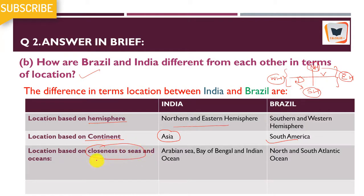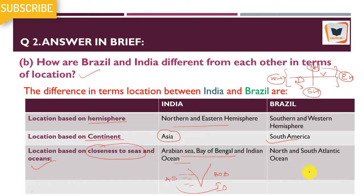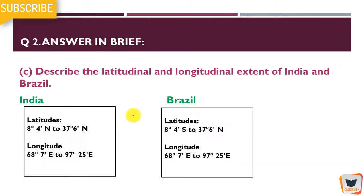In terms of location based on closeness to sea — for India you can see the Arabian Sea, the Bay of Bengal, and the Indian Ocean forming the peninsular region. For Brazil, there is the North Atlantic Ocean above and the South Atlantic Ocean below. You have to write these differences in your table.